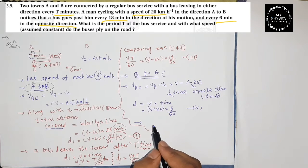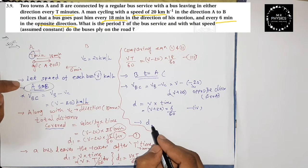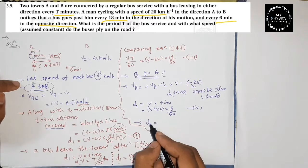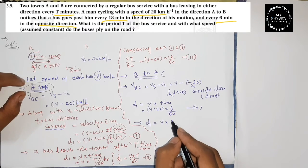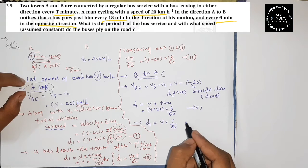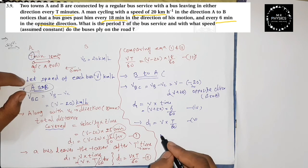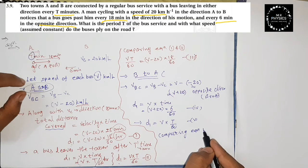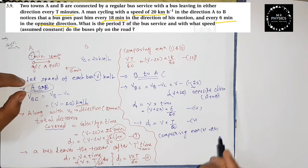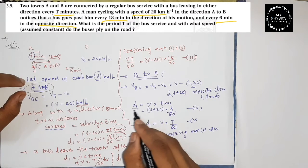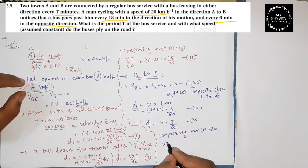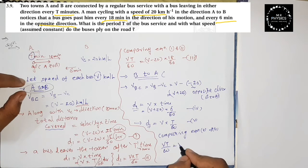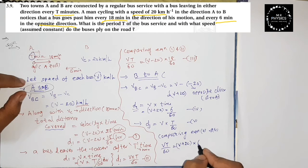From each town, the bus leaves after T minutes, so D1 equals V into T by 60 — this is equation number 5. Comparing equations 4 and 5, since both equal D1, we get: V into T by 60 equals (V plus 20) into 6 by 60. This is equation number 6.